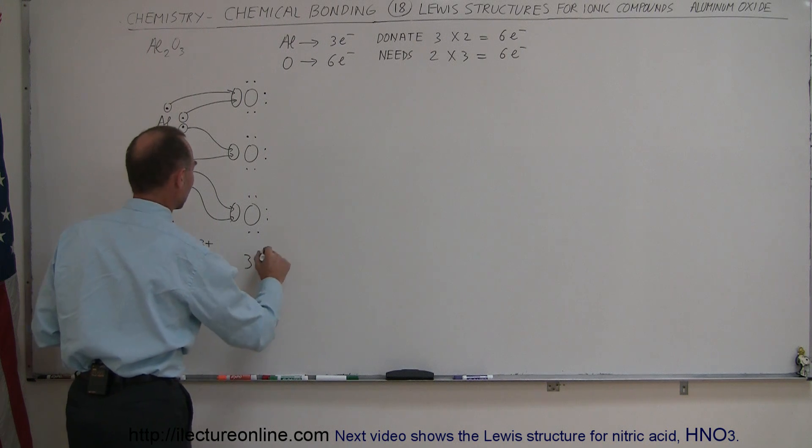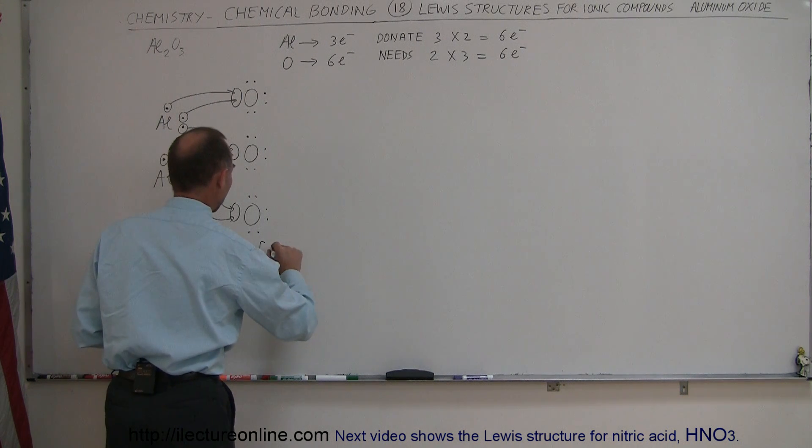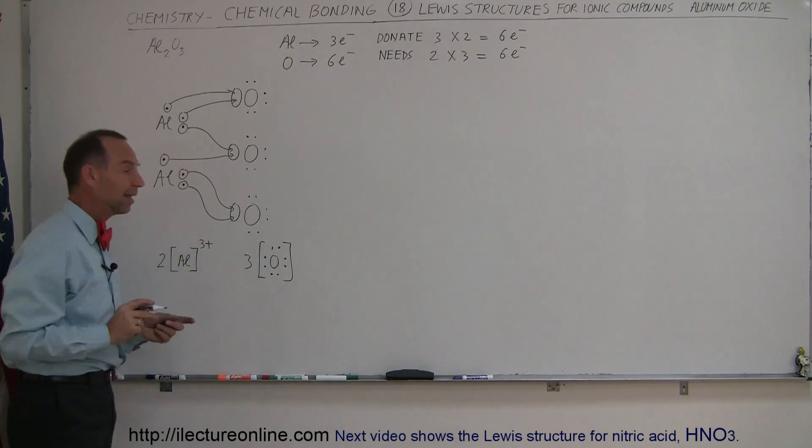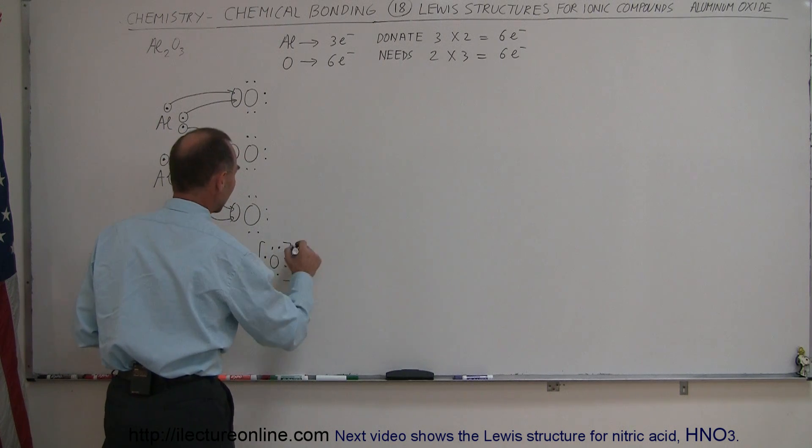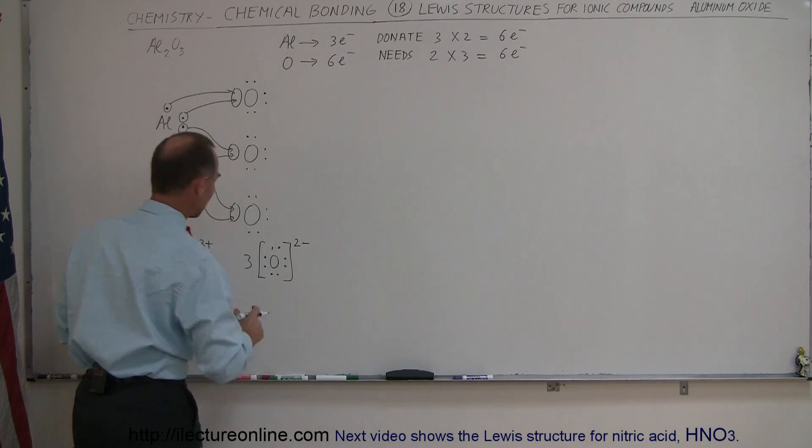Then we have three oxygen atoms which now have eight valence electrons like so and since they each received two extra electrons above and beyond what they came with they will then be a two negative charge.